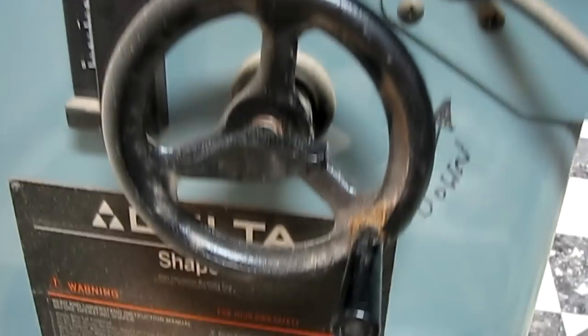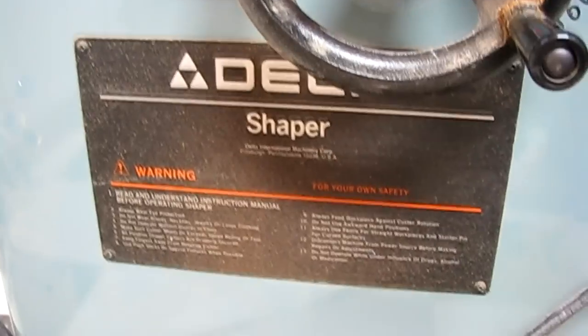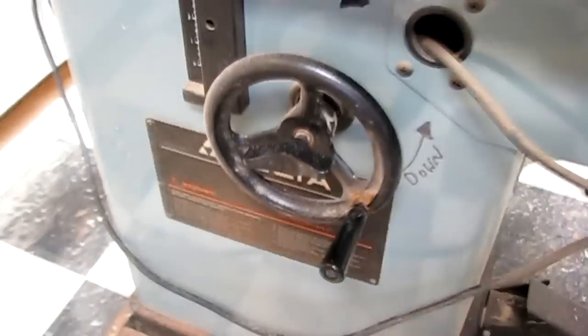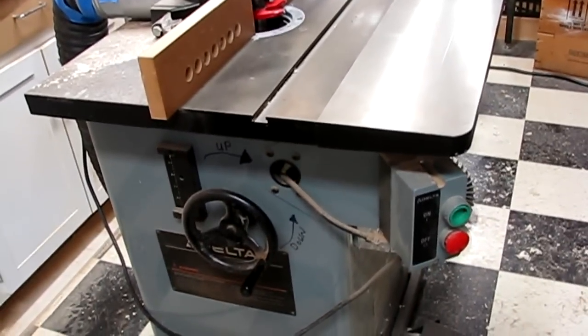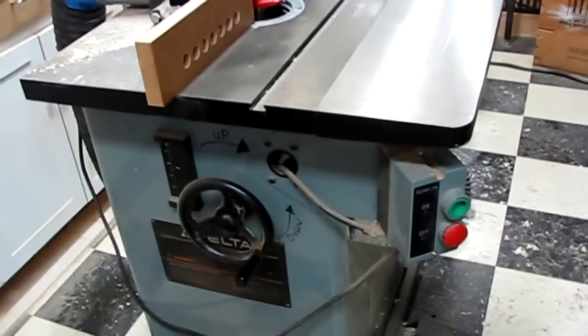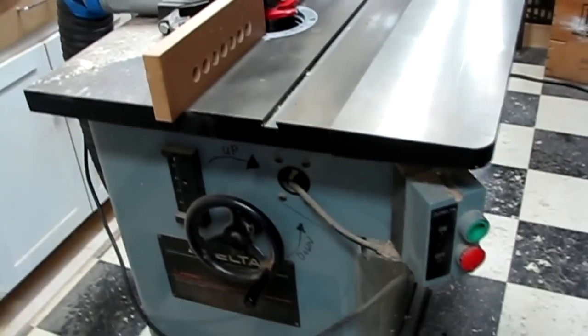By the way, what we're using here is a Delta industrial shaper. Like I said, we don't use this very often, but when we do it's the bomb. It goes off like a bomb, doesn't it? It shakes the whole building when you turn it on. Sucker's heavy duty.